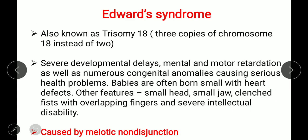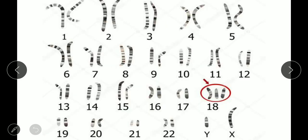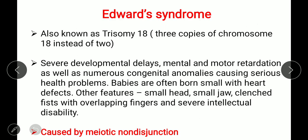Edward syndrome is also known as trisomy 18 because normally there are 23 pairs of chromosomes, and in this condition there is one extra copy of the 18th chromosome. Normally chromosomes come in pairs of two, but here there is one extra copy in chromosome 18, making it trisomy 18. Trisomy means addition of one extra chromosome, denoted as 2n plus 1.